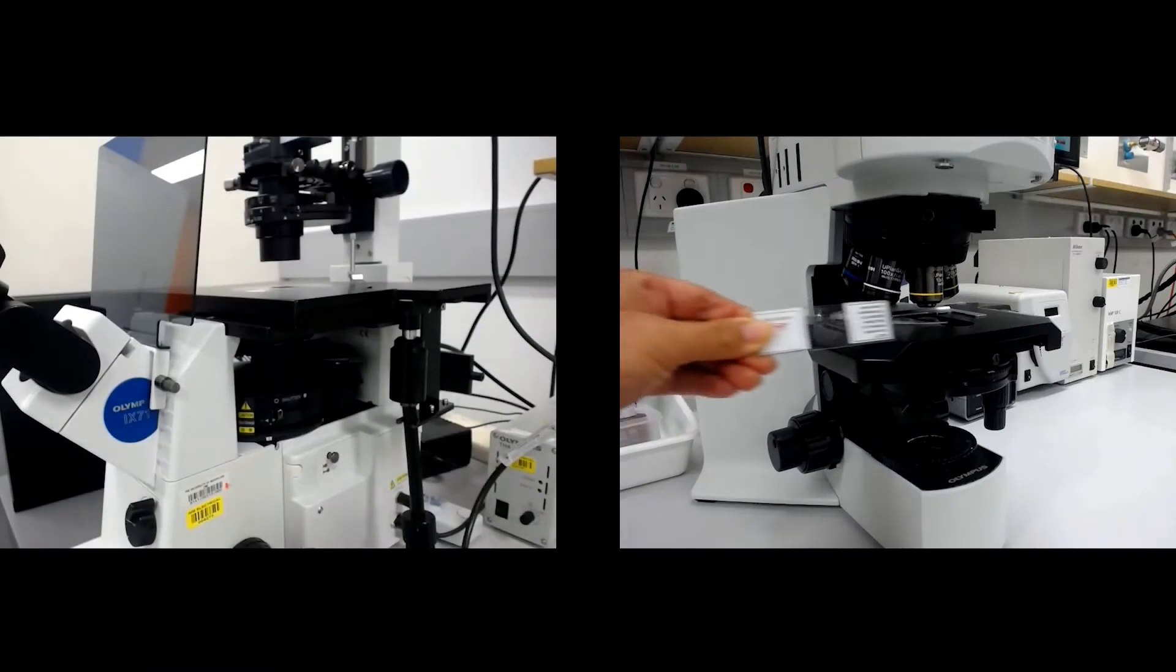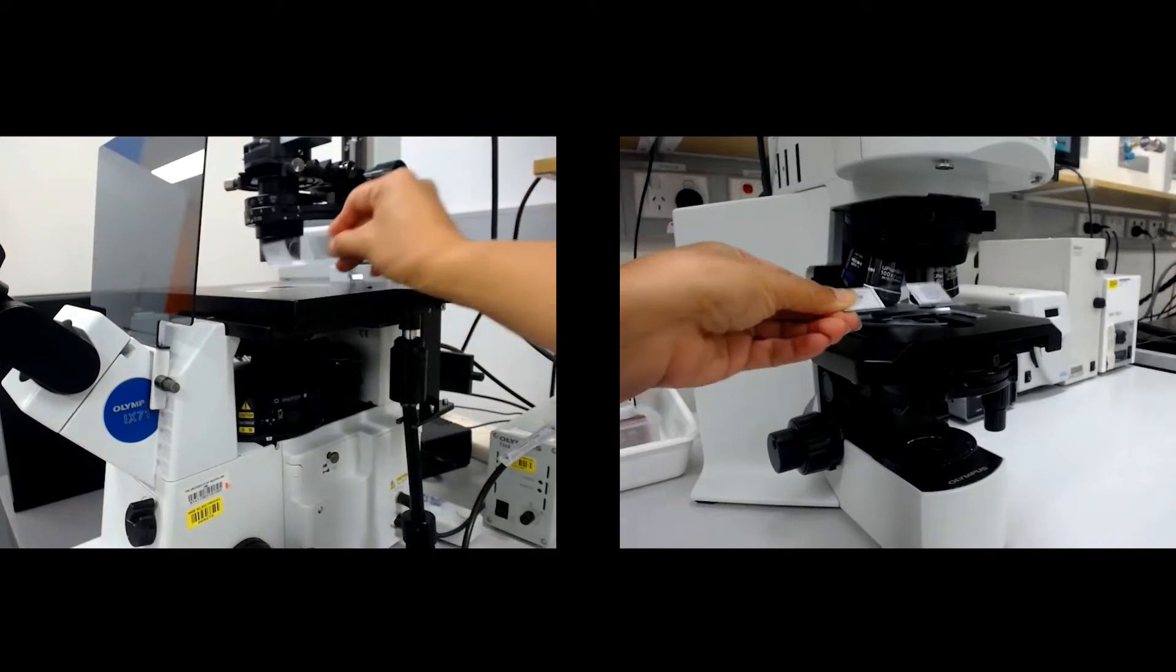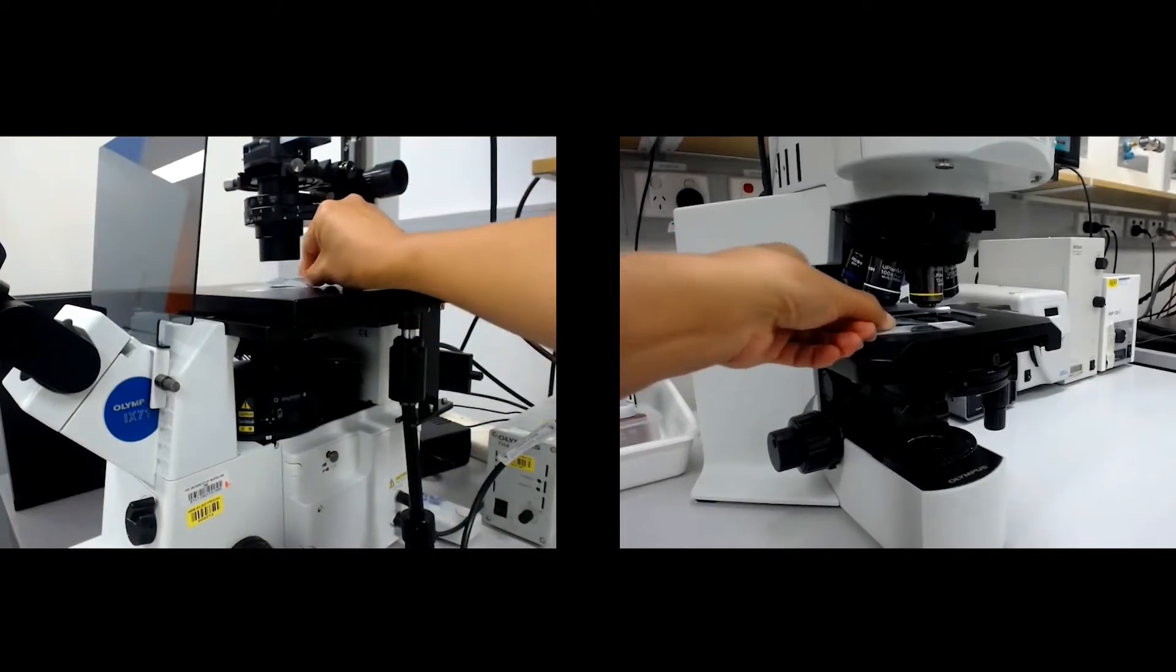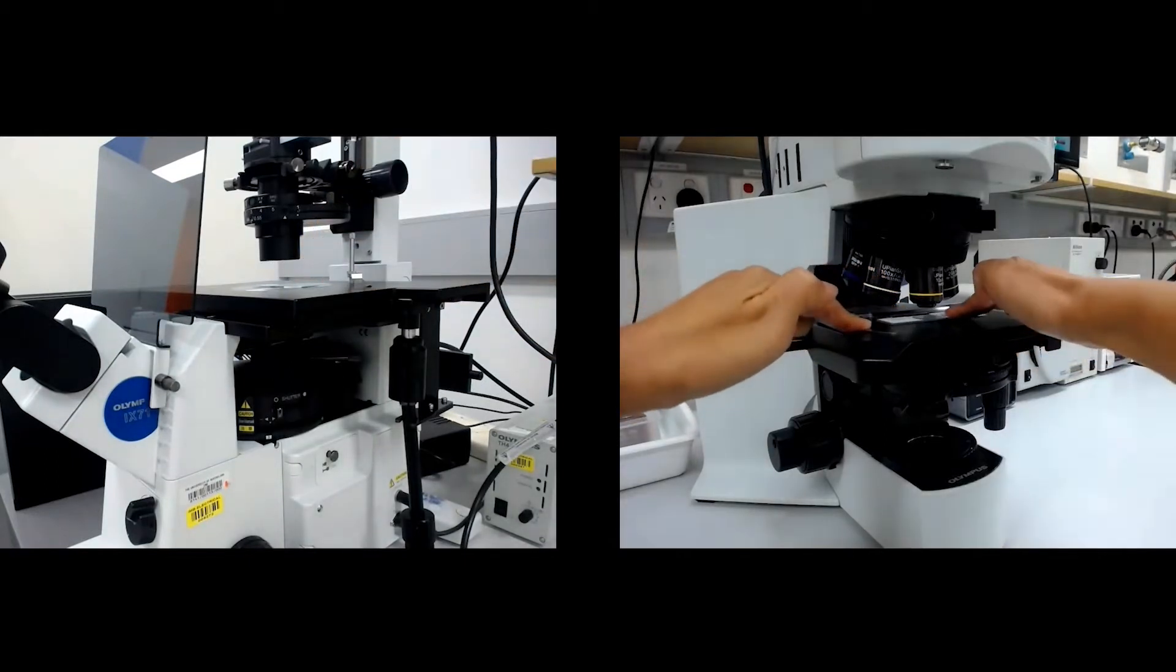Place the specimen on the stage, ensuring the cover slip points towards the objective. So on an upright microscope, the cover slip points up, and on an inverted microscope, the cover slip points down.